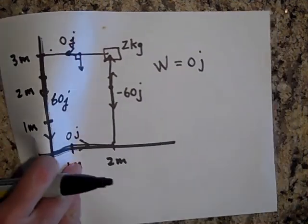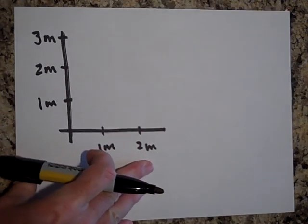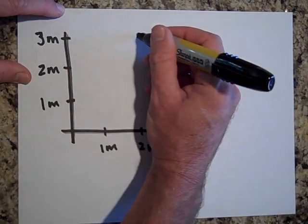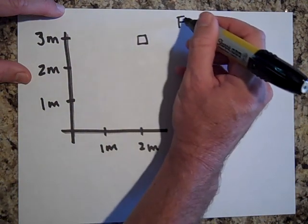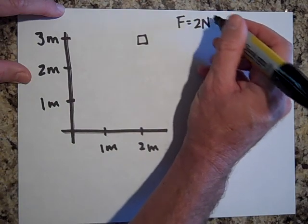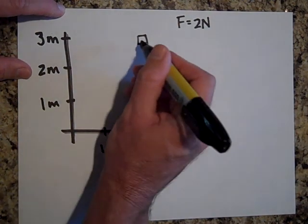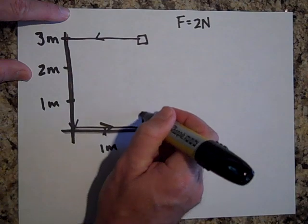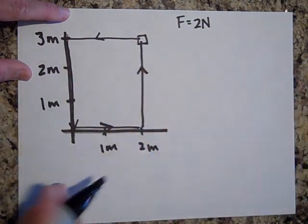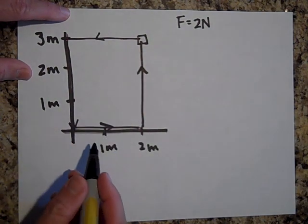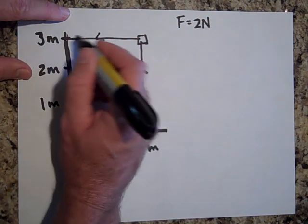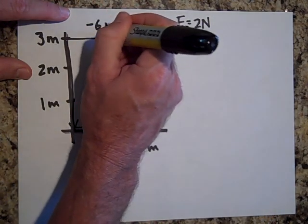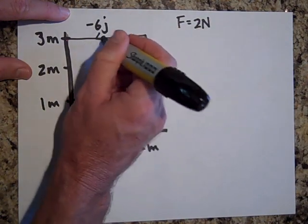Now let's look at a non-conservative force: friction. We have a tabletop with a box, and friction is two Newtons, always opposing the direction of motion. Moving the box around a closed rectangular path, for the first segment the frictional force opposes displacement, giving −4 joules (2 N × 2 m, negative because force and displacement are opposite).